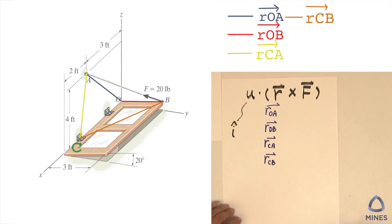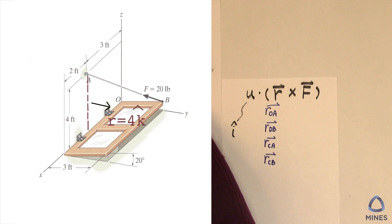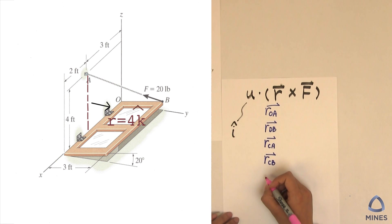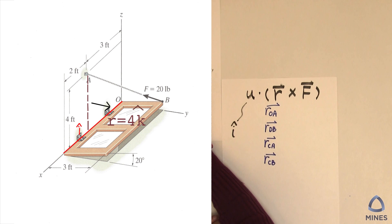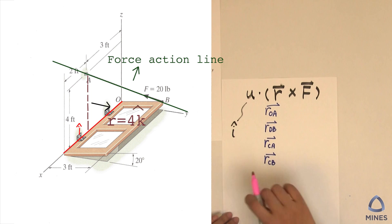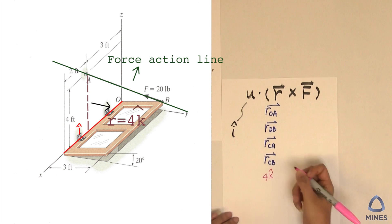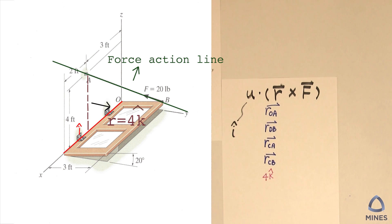Some students, in order to do the easy calculation, even want to use the pink line as r. It starts from any point on the axis we want to calculate to any point on the force's line of action, which means this r here will be 4k. All of them can be an option — you just need to choose one of them in your calculation and you should be fine.